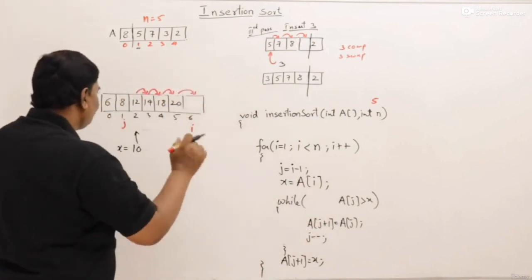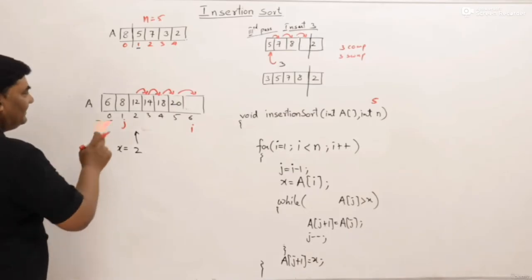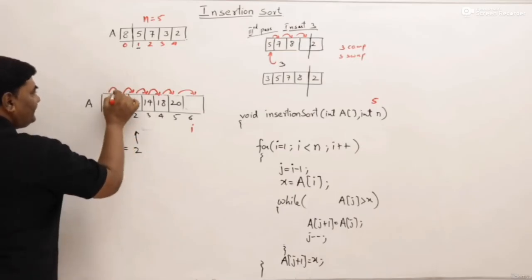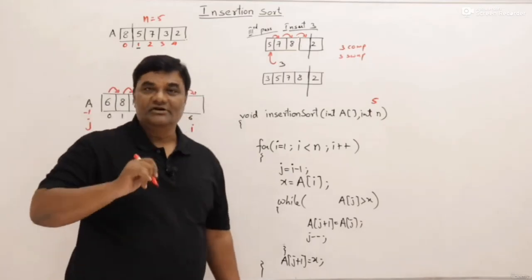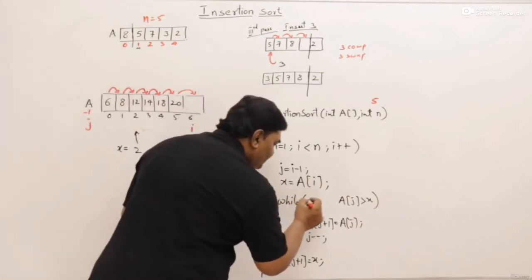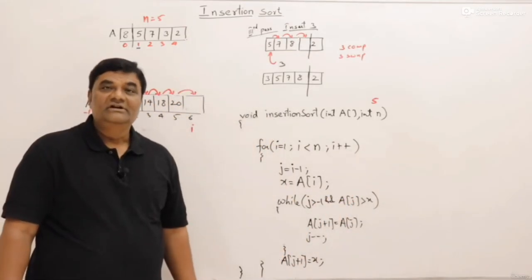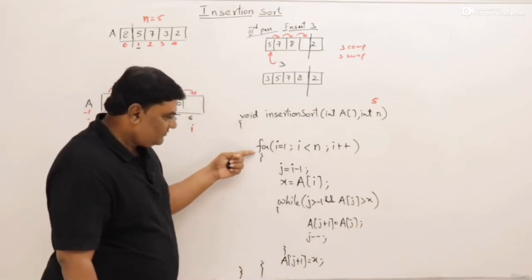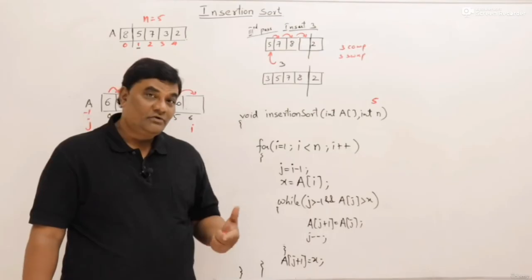One more condition is needed: if the element being inserted is smaller than all existing elements, j will reach minus 1. So the while loop must also check j > −1. The full condition is: while j >= 0 and a[j] > x. This is the complete algorithm for insertion sort. The time complexity is n squared, confirmed both analytically and from the code, which has a for loop with a while loop nested inside — two nested loops giving O(n²).